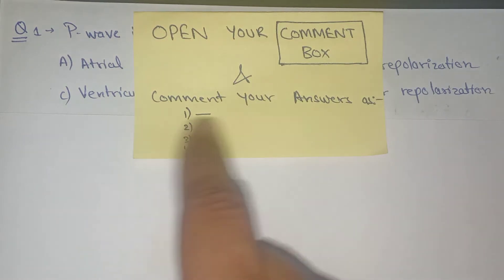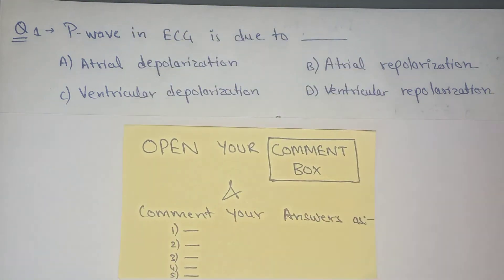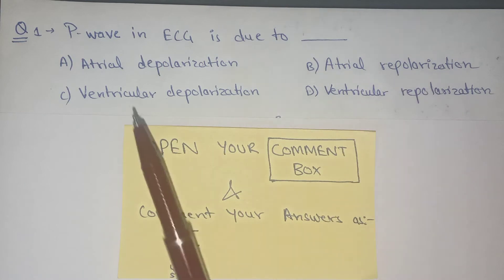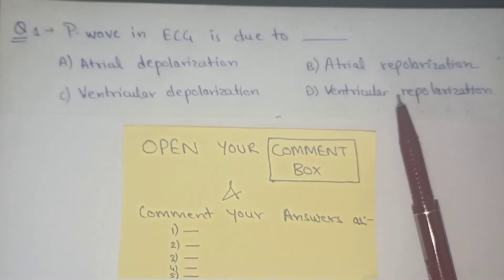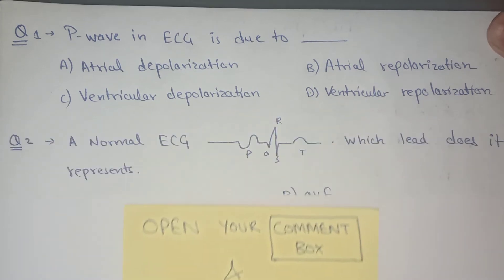The first question is: P wave in ECG is due to? Options are: A) Atrial depolarization, B) Atrial repolarization, C) Ventricular depolarization, or D) Ventricular repolarization. Comment your answer.